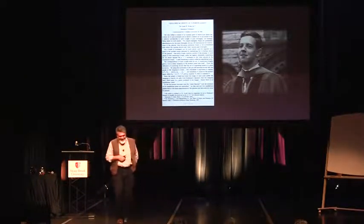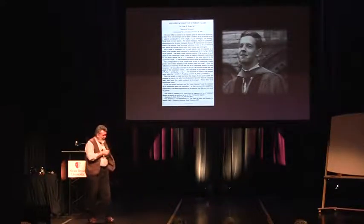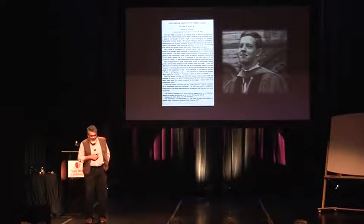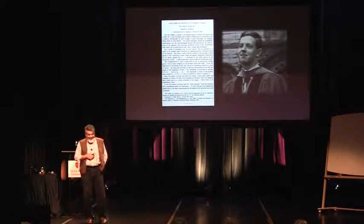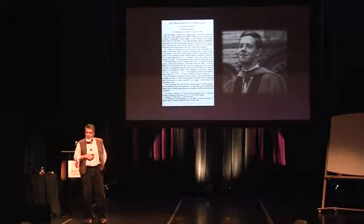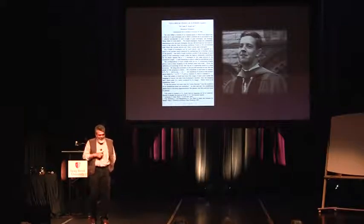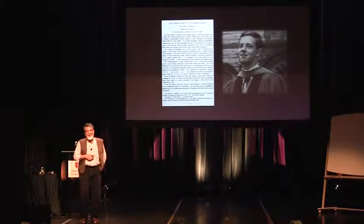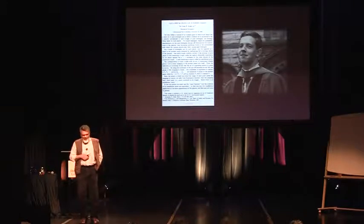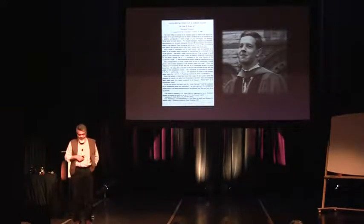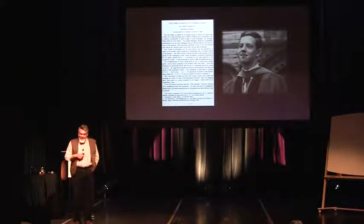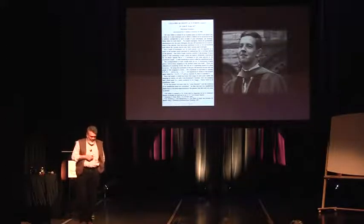John Nash also published — and this was 1950 — the Brouwer fixed point proof in 1951 in the Annals of Mathematics. Then in 1950, he also published another paper which we all know, 'The Bargaining Problem,' in which he developed a cooperative solution from an axiomatic point of view. And in 1953, there was a publication in Econometrica called 'Two-Person Cooperative Games,' where he developed a non-cooperative approach to the bargaining problem.